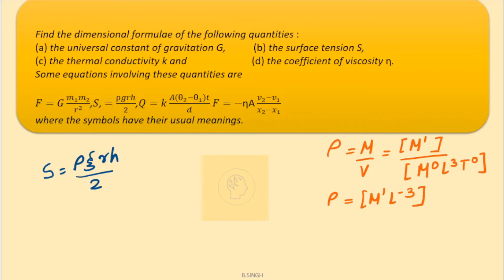Rho is density over here. G is acceleration due to gravity, and acceleration has dimensions of L1 T minus 2. Finally, the dimensions of r which is the radius and h is also the length, so the dimensions of this is M0 L1 T0.